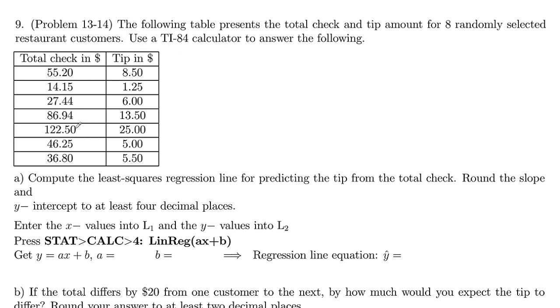So here we've got our total check amount and then the corresponding total tip amount, both in dollars. We want to compute the least squares regression line for predicting tip from the total check amount. So our total check amount, those are our x's, and then the tip generally would depend on the total check amount.